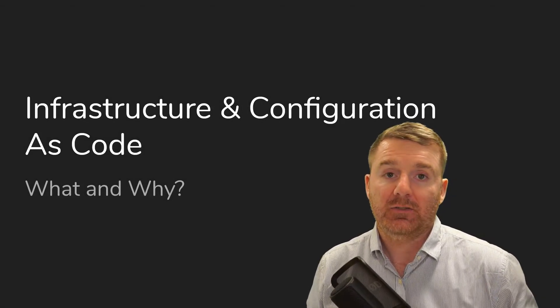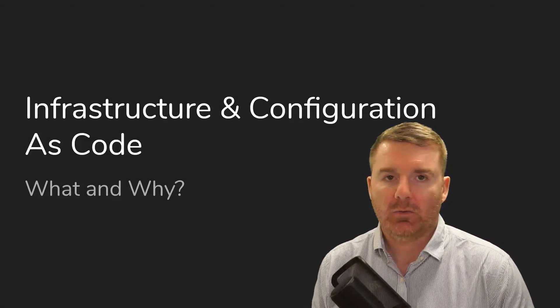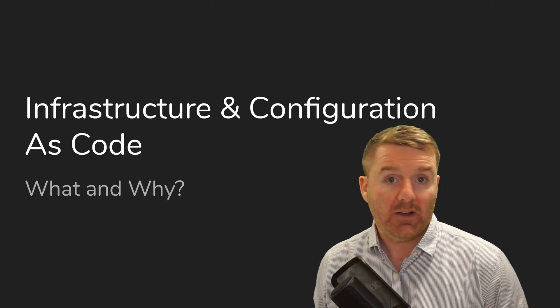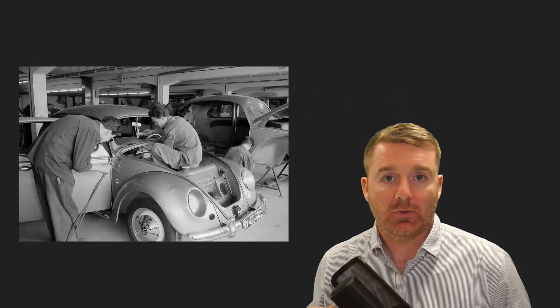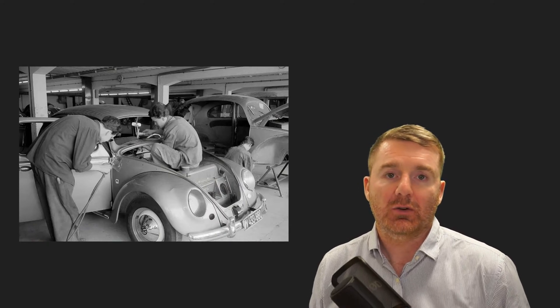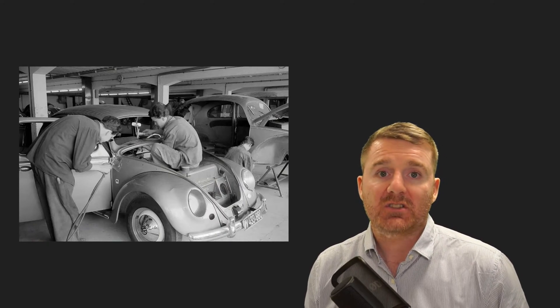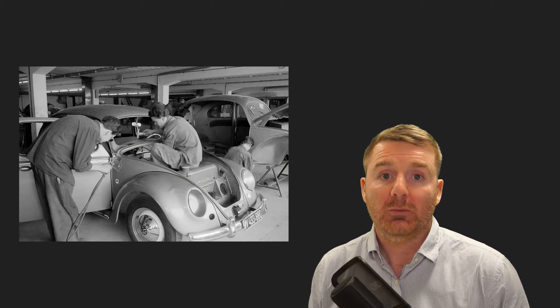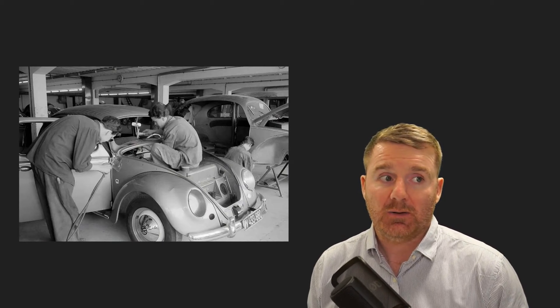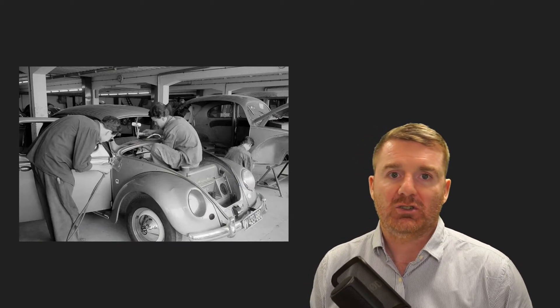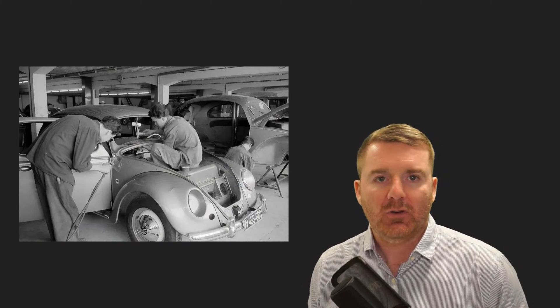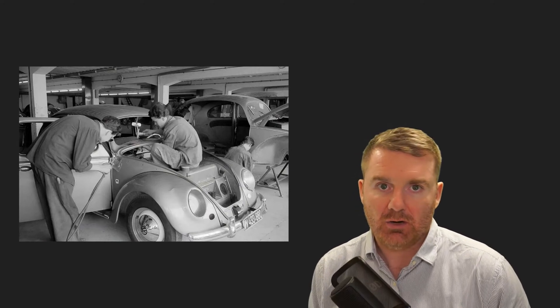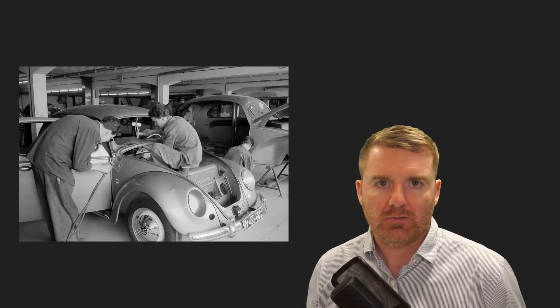So, infrastructure and configuration as code - what are they and why do we need them? Before we get into those two concepts, infrastructure as code and configuration as code, we've first got to understand the underlying problem that they're trying to solve. This image is a perfect illustration of the problem that DevOps, automation, infrastructure as code, and configuration as code are trying to solve for us.